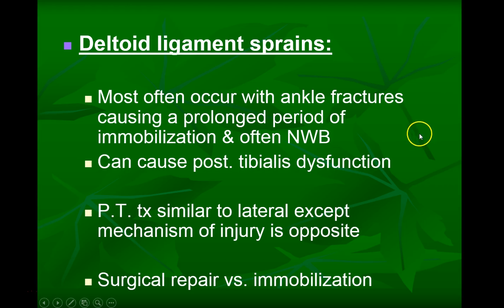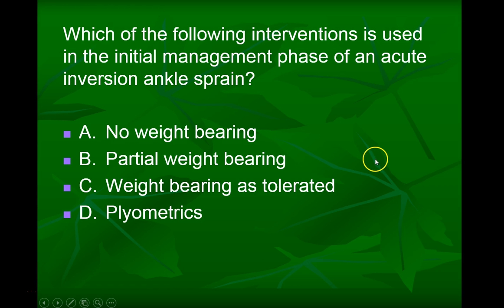A boards-style question: which intervention is used in the initial management phase of an acute inversion ankle sprain? The answer is weight-bearing as tolerated — that's hands down. Patients are typically told to put as much weight as they can tolerate using an assistive device. Non-weight-bearing hopping is never typically ordered, and plyometrics are very late-stage.